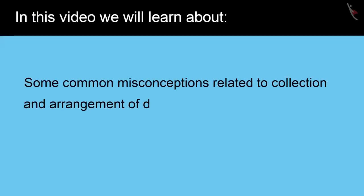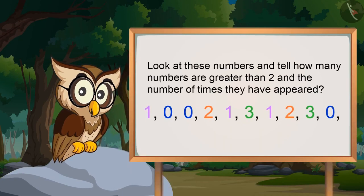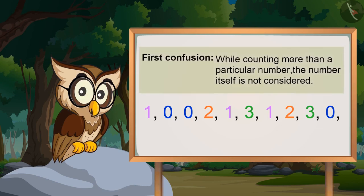In this video we will learn about some common misconceptions related to collection and arrangement of data in tabular and pictographic form. We often make mistakes in the collection of data. For example, look at these numbers and tell how many numbers are greater than 2 and the number of times they have appeared. We usually get confused — should we count 2 or not?